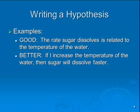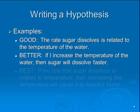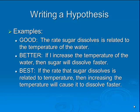Your independent variable follows that 'if' statement, which would be temperature. So if I change the temperature, then the sugar will dissolve faster, and the speed or rate that the sugar dissolves is your dependent variable. A really good hypothesis would combine the two: if the rate that sugar dissolves is related to the temperature, then increasing the temperature will cause it to dissolve faster.